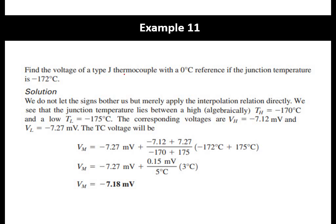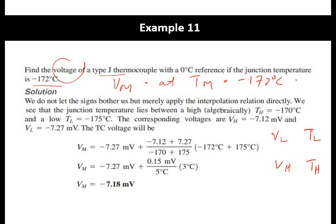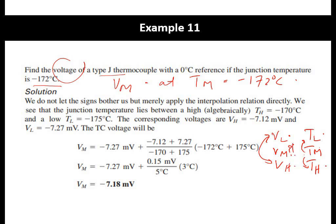Another interpolation example: find the voltage Vm for a type-J thermocouple at Tm = −172°C. We apply the interpolation formula using V_low and V_high from the table at T_low and T_high. The measured temperature sits between T_low and T_high, and we find Vm. It is just an equation and substitution. That is all for this chapter — see you in the next chapter.